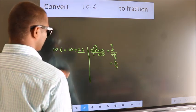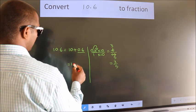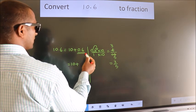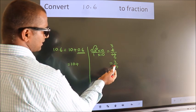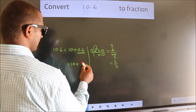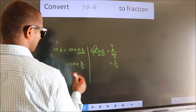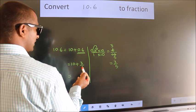Now here, 10 plus in place of 0.6, now we write this fraction 3 by 5. 10 plus 3 by 5.